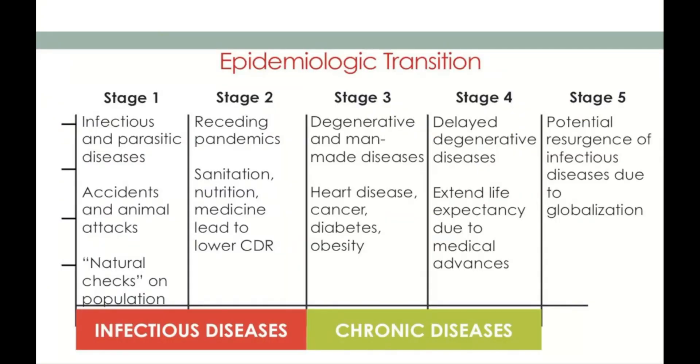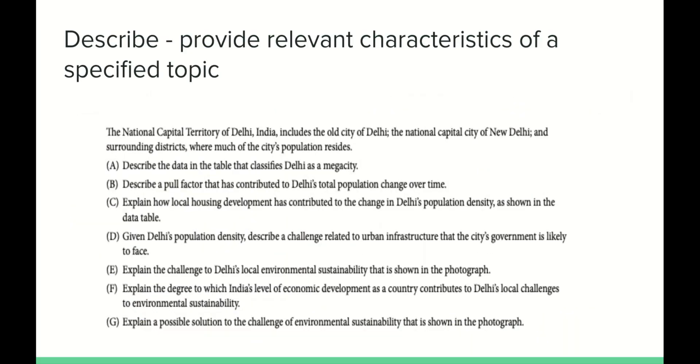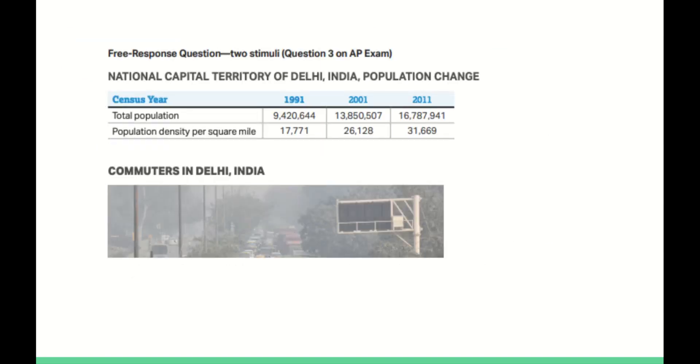Let's spend some time with the describe verb prompt. This is an FRQ that came from the course description. I just wanted to point out to you, looking at this, notice how many verb prompts you have here that are higher level, right? You have describe, describe, explain, describe, explain, explain, explain. So these are all really higher level FRQ prompts. The first one described the data in the table that classifies Delhi as a mega city. So I went ahead and I grabbed this as well. This is the table that they're talking about. And you can see here.